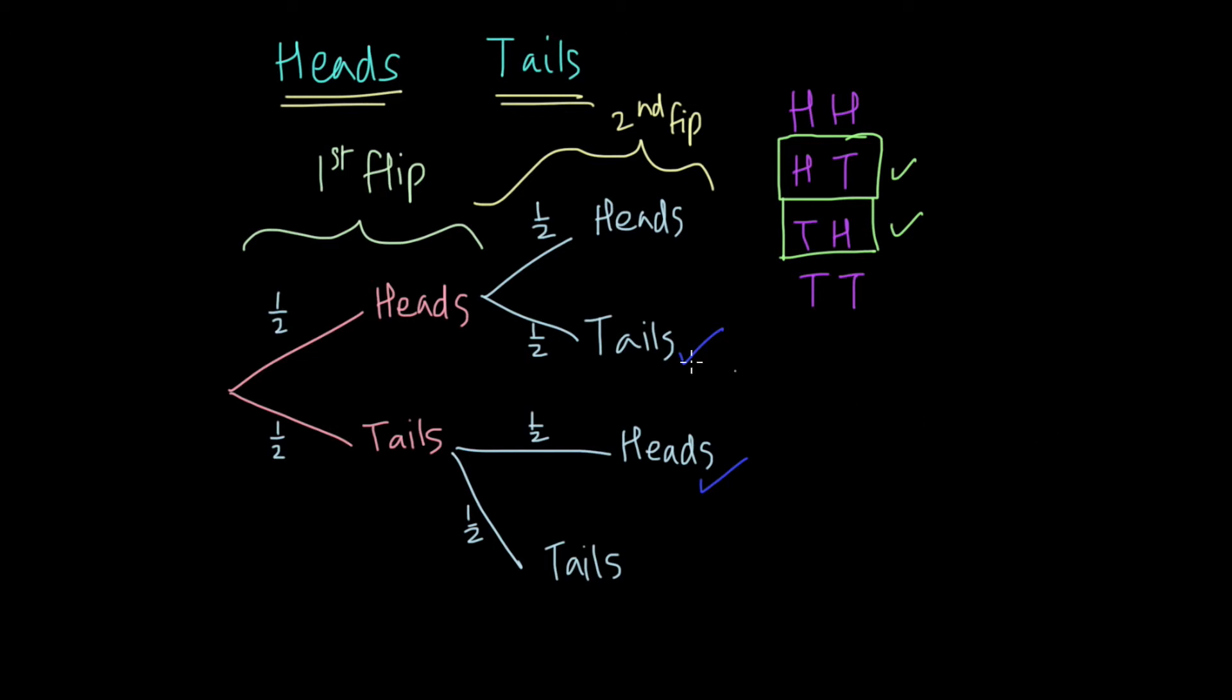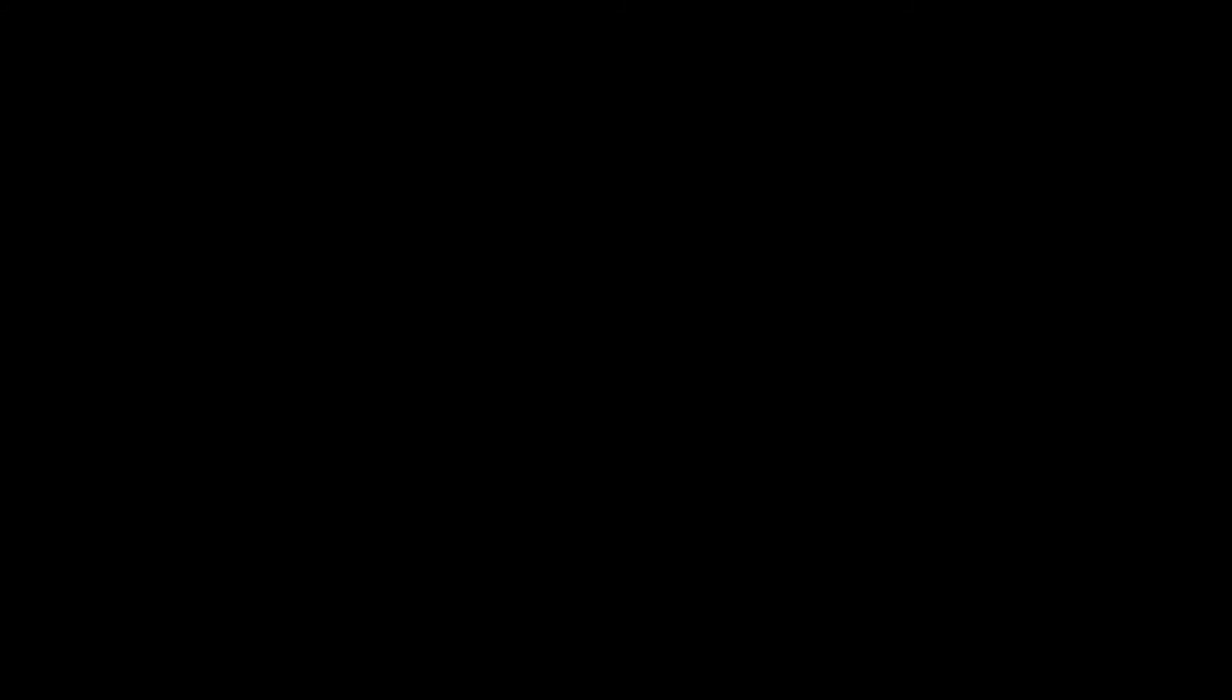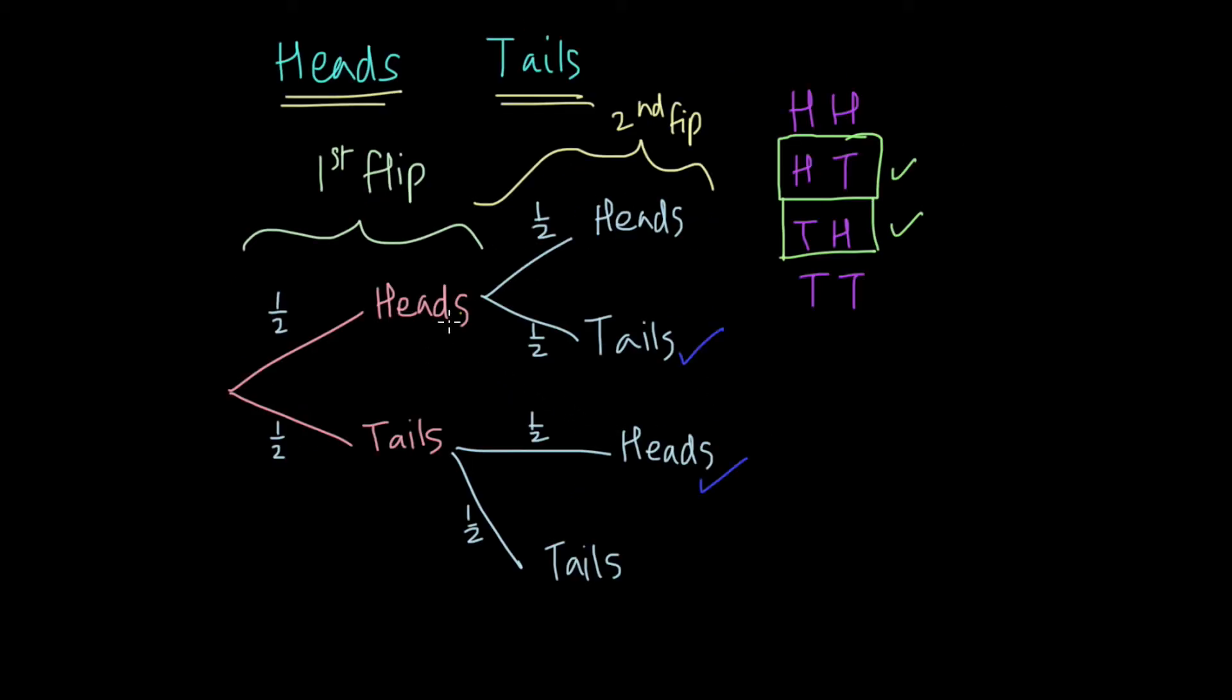To calculate the probability of each, let me just quickly go back here. The rule we said is that if we're going across branches, we have to multiply. So when I go across branches to first heads in my first flip and tails in my second, I have to multiply. So the probability of getting heads and then tails is going to be a half times a half.